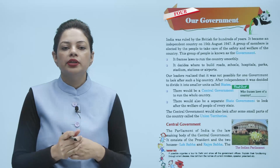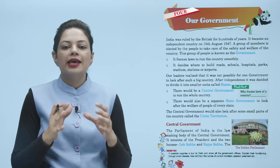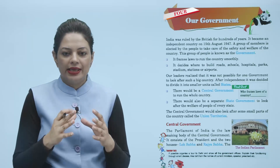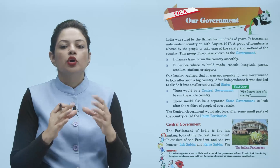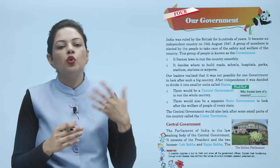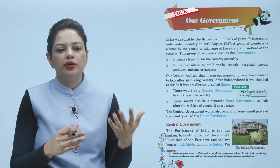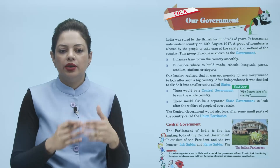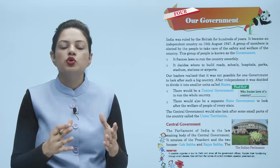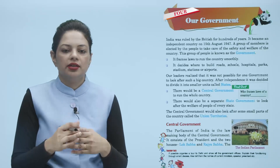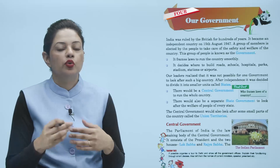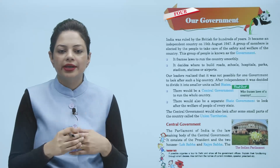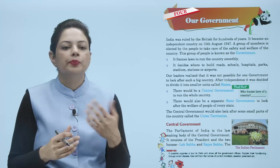तो government क्या होती है बच्चों — एक ऐसा group of members, जिसमें जो members हैं वो लोगों द्वारा elected होते हैं और ऐसा group जो पूरे country की take care करता है, उसके लिए rule और regulation बनाता है, उस group को नाम दिया गया है government का।